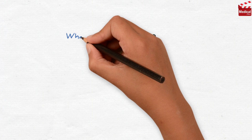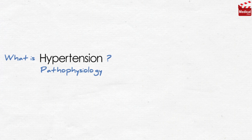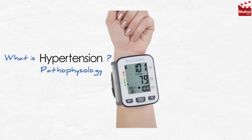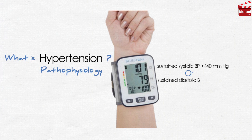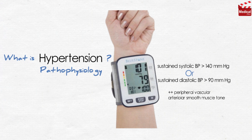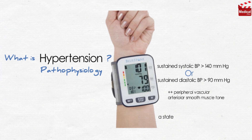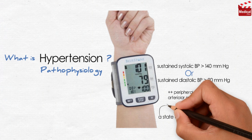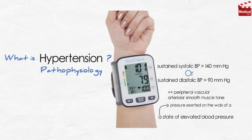The first thing we should know is: what is hypertension? Hypertension is defined as either a sustained systolic blood pressure of greater than 140 mmHg, or a sustained diastolic blood pressure of greater than 90 mmHg. Hypertension results from increased peripheral vascular arteriolar smooth muscle tone — in other words, hypertension is a state of elevated blood pressure, which is the pressure exerted on the walls of arteries.